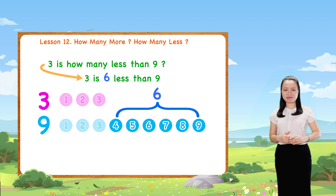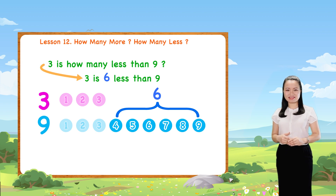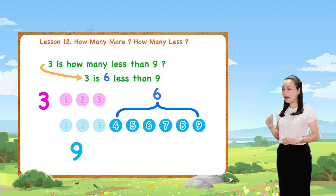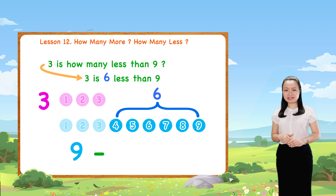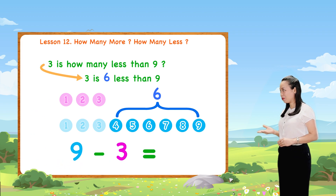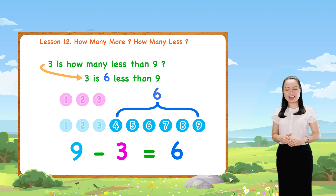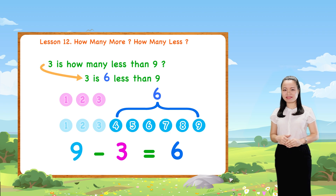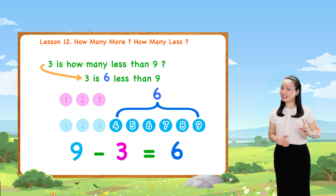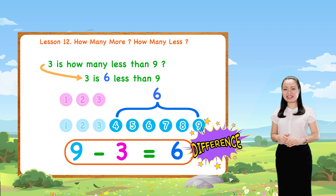Notice, nine minus three equals six. So, to find how many less, we also find the difference between the two numbers.